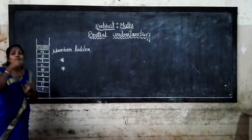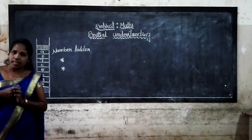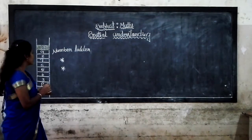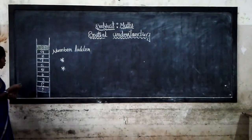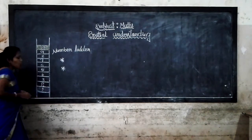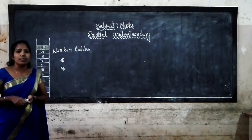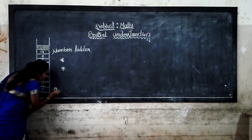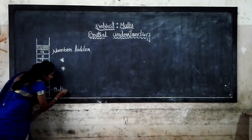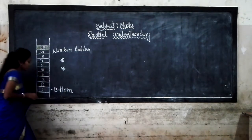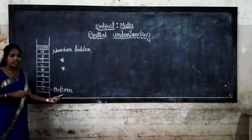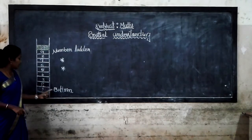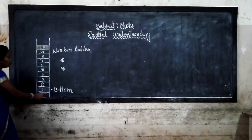Then which number is at the bottom of the ladder? For the first one, what is the position of number 1? The position of number 1 — is it placed at the bottom? Yes, when you see number 1, it is placed at the bottom. That's why the position at the bottom of the ladder is number 1.